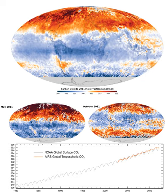The longest ice core record comes from East Antarctica, where ice has been sampled to an age of 800,000 years. During this time, the atmospheric carbon dioxide concentration has varied between 180–210 ppm during ice ages, increasing to 280–300 ppm during warmer interglacials.